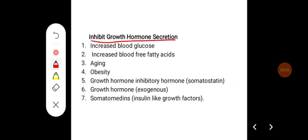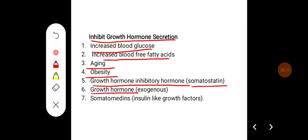Factors that inhibit growth hormone secretion include: increased blood sugar levels, increased blood free fatty acids, aging, obesity, growth hormone inhibitory hormone (somatostatin), exogenous growth hormone, and somatomedins (insulin-like growth factors), which inhibit growth hormone production.